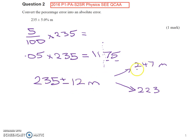So 235 plus 12, 235 minus 12. Our answer is somewhere between 247 and 223. That's a 5% error. But to convert it into an absolute error, that's 235 plus or minus 12 metres. Thank you.